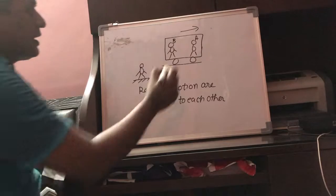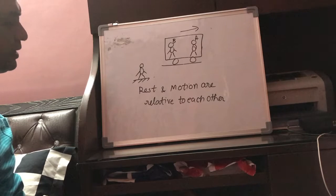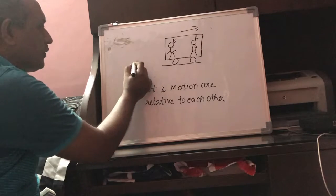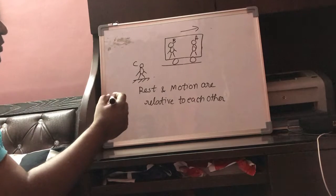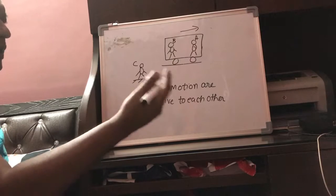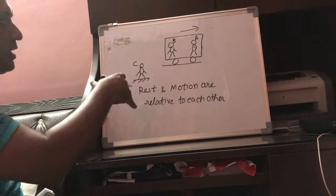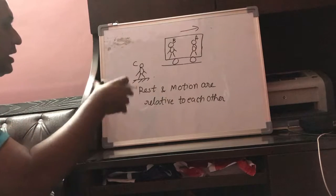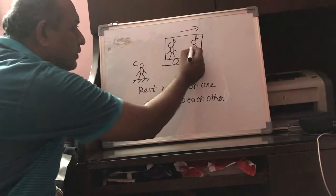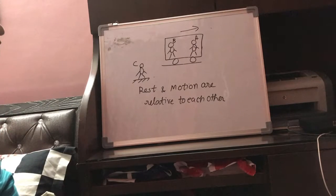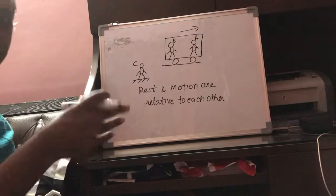Now we can say that A is at rest with respect to B, but A is in motion with respect to C. Because A and B are both in the same compartment, when B observes A, he says that A is at rest with respect to him. At the same time, when C is observing A, since the compartment is moving, A is also in motion. So A is in motion with respect to C.